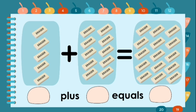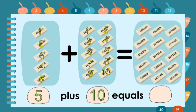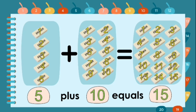Let's proceed to another example. Students, let's count together: one, two, three, four, five — five erasers. Plus one, two, three, four, five, six, seven, eight, nine, ten — ten erasers. Equals. Let's count together: one through fifteen. Five erasers plus ten erasers equals fifteen.